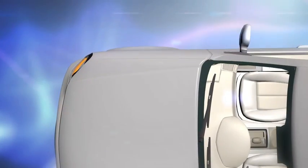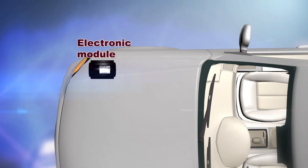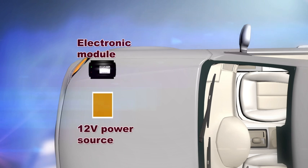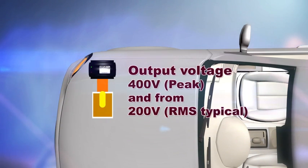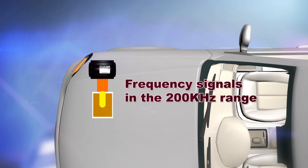The first component is our CouplerTech electronic module which is connected to a 12 volt power source. The module draws a very small charge from the power source and transforms this into an output voltage of 400 volts peak and from 200 volts RMS typical. The CouplerTech module generates frequency signals in the 200 kilohertz range.